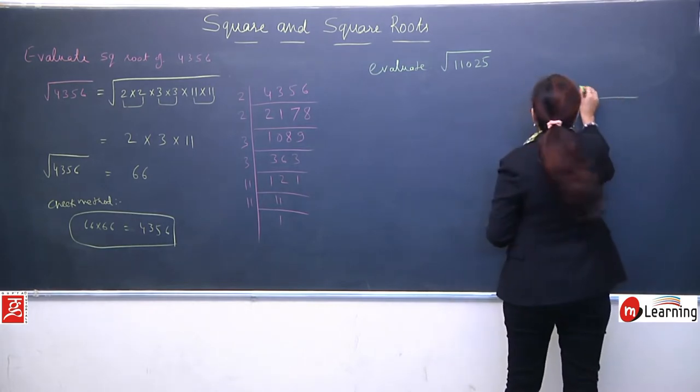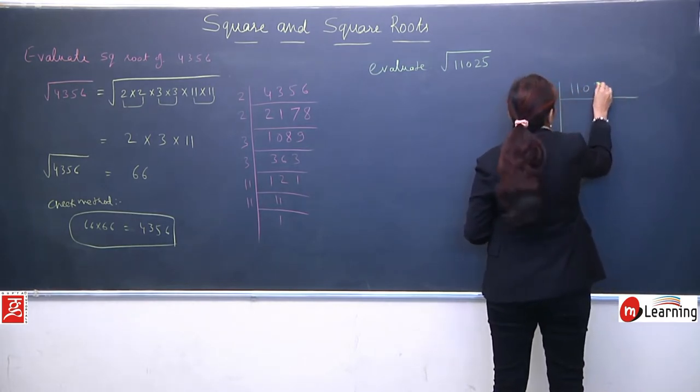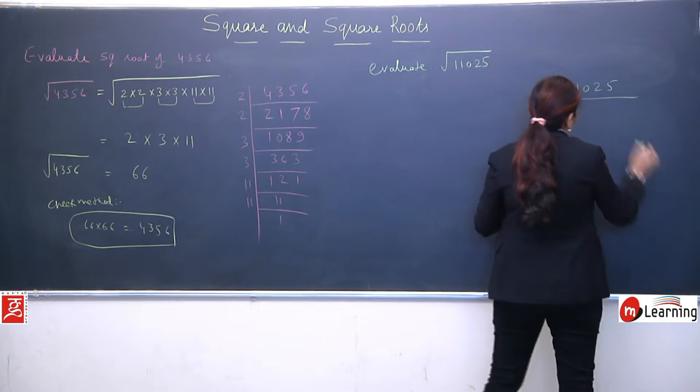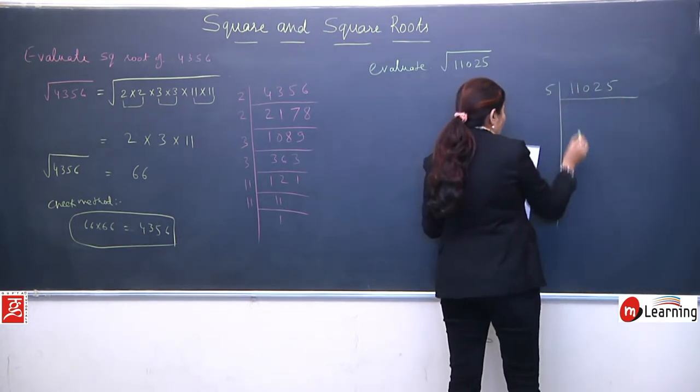This practice you need to do. Another one is evaluate square root of 11025. We need to find its square root. Again the same procedure, we need to do prime factors.